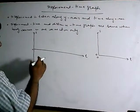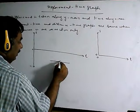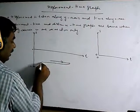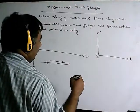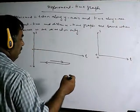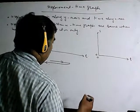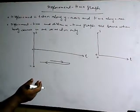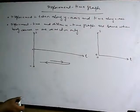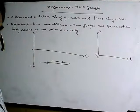This graph is used when the body moves first in one direction and then in the other direction. If the body moves only in one direction — whether positive or negative displacement — we have all these corresponding graphs.